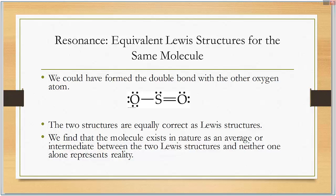The two structures are equally correct in the Lewis structures. We find that the molecule exists in nature as an average or intermediate between the two Lewis structures and neither one alone represents reality. In other words, this double bond ends up getting shared between all three of those atoms.